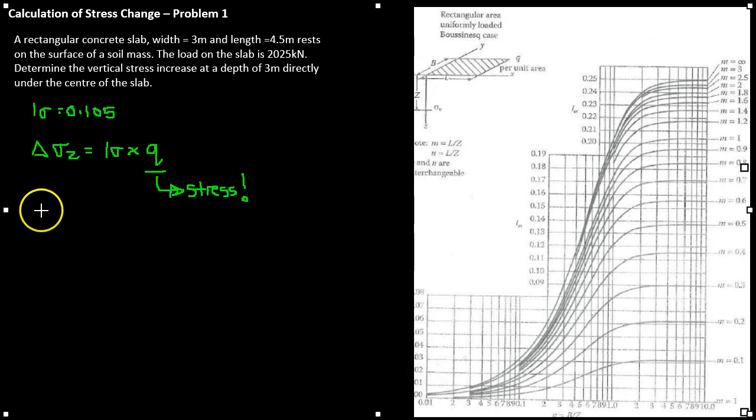Before we can calculate the change in stress, delta sigma Z, we need to change our value of load in kilonewtons into a stress. If you remember, the equation for delta sigma Z equals Q, which is the stress, times the influence factor.